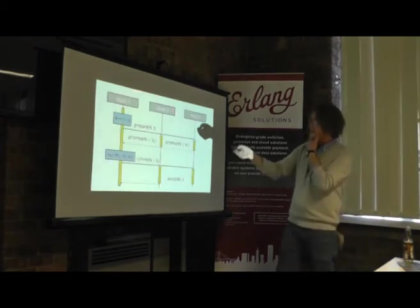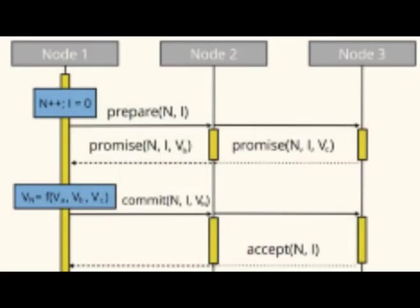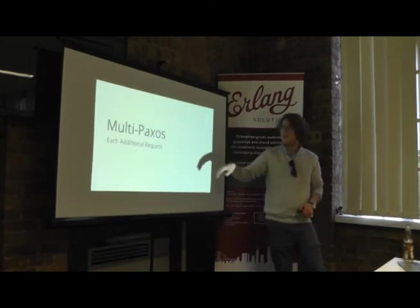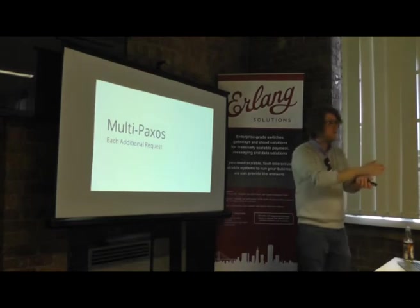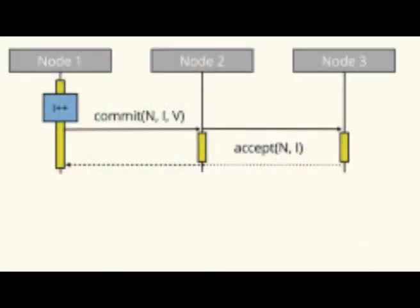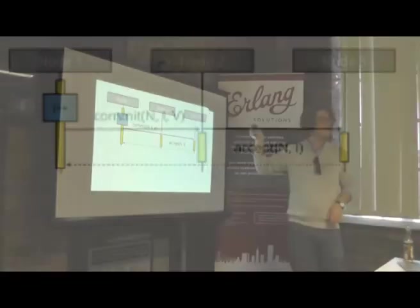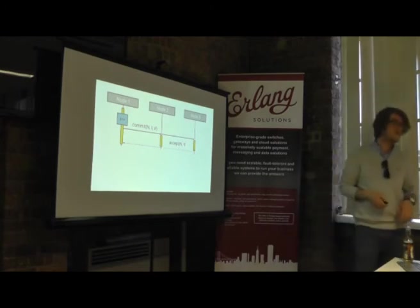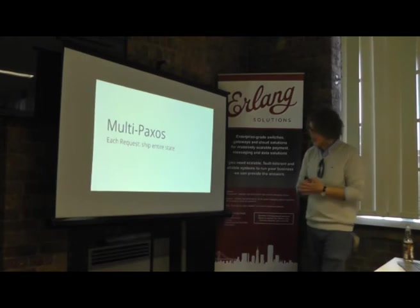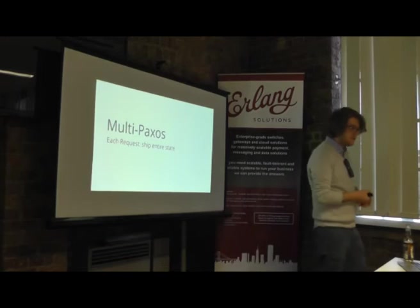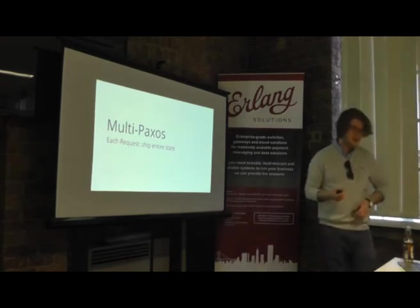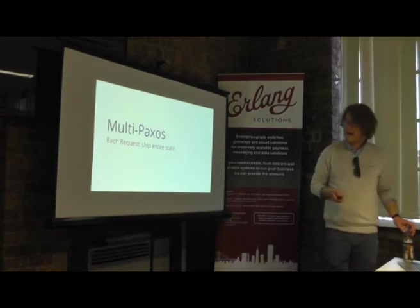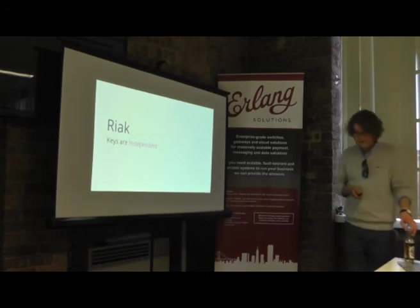With Multi-Paxos: we do the full two-round-trip process for the first write via leader election, but for every additional write, as long as that node is still leader, we only need to increase the ballot number and do a one-round-trip process. This cuts out one round trip per write. The algorithm was originally written to ship all the state you want to agree on, which is fine academically but glosses over the practicalities of a real system. Riak is key-value with independent keys — no multi-key transactions.